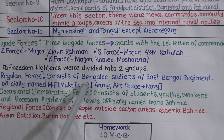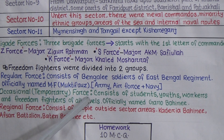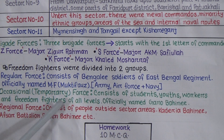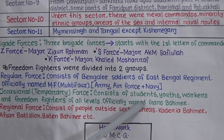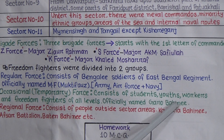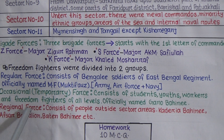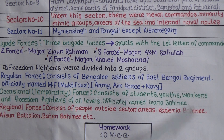The Occasional or Temporary Force consisted of students, youths, workers, and freedom fighters of all levels — teachers, doctors, engineers, and people of every sphere. The official name of this temporary force is Gano Bahini. Additionally, there was a Regional Force in the liberation war, consisting of freedom fighters who joined from different areas outside the sector regions. Examples include Kadiria Bahini, Afshar Battalion, and Batten Bahini.